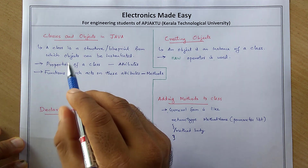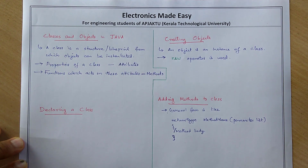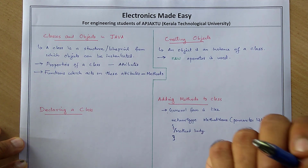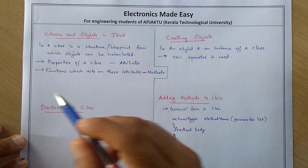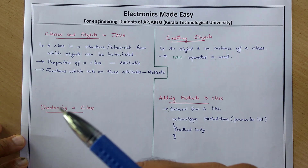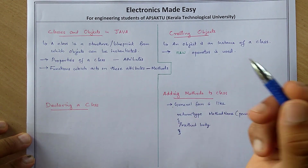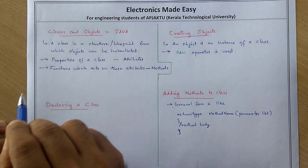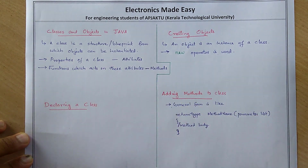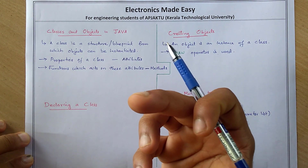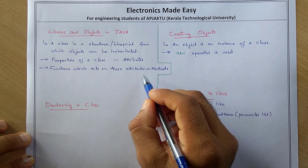What is a class? A class is a structure or a blueprint from which an object can be instantiated or created. The properties of a class are called attributes, and all the functions which act on these attributes are called methods.